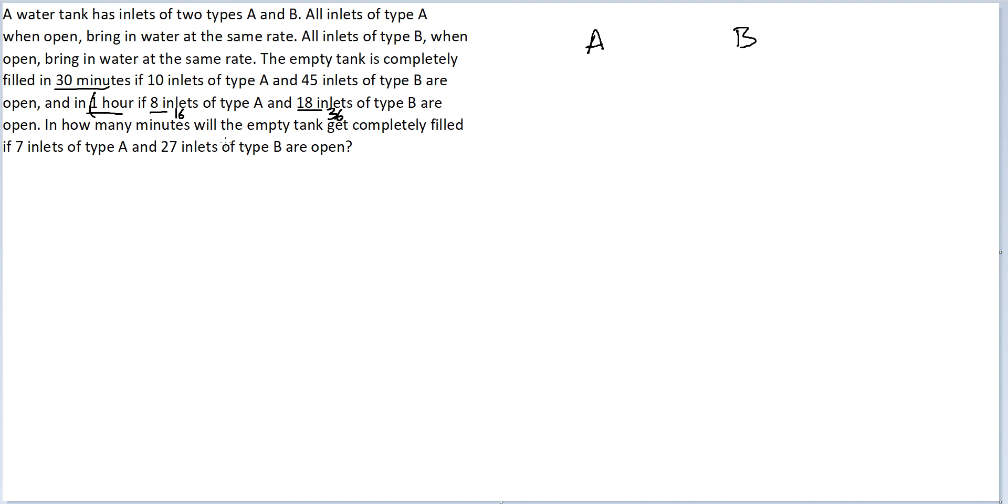And then after doubling I would have 16 inlets of type A and 36 inlets of type B. So the amount of work done by 10 inlets of type A and 45 inlets of type B in the same duration is the same as 16 inlets of type A and 36 inlets of type B. Using this you can reach the conclusion 6A is equal to 9B or A by B is equal to 3 by 2.